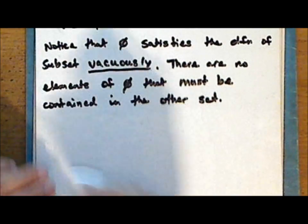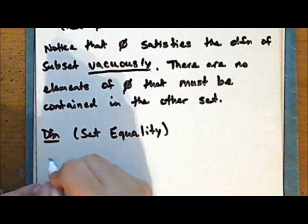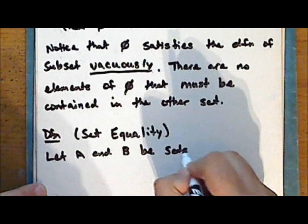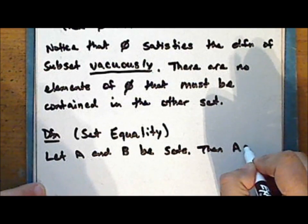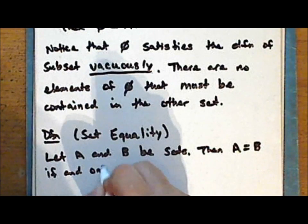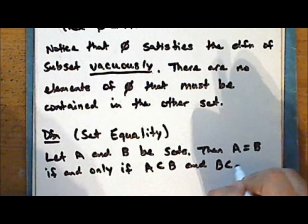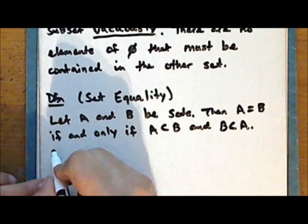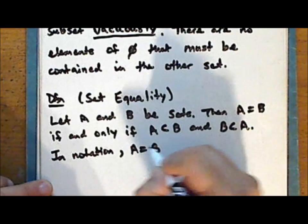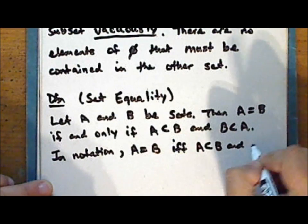So now we can define set equality. Let A and B be sets. Then set A is equal to set B — that is, A and B are the same set — if and only if A is a subset of B and B is a subset of A. In notation, A = B if and only if (IFF) A ⊆ B and B ⊆ A.